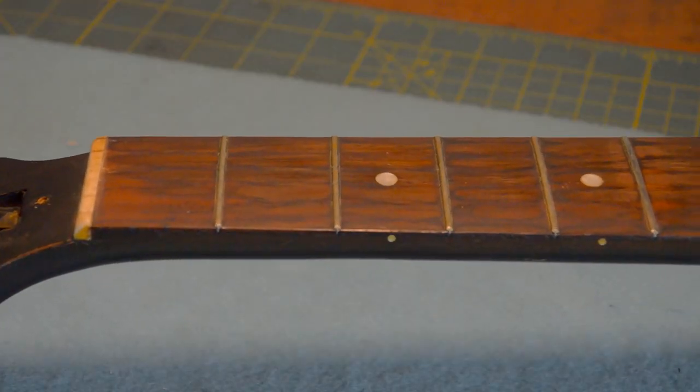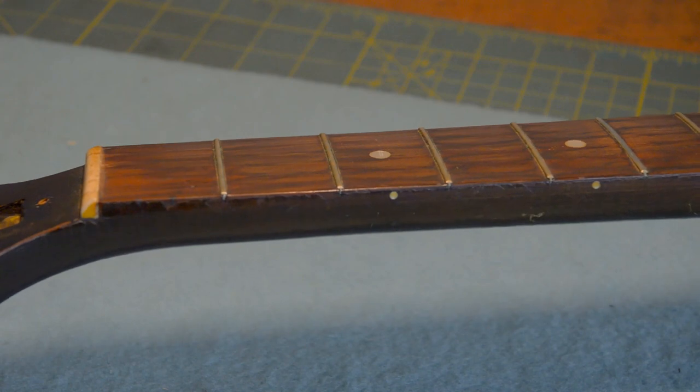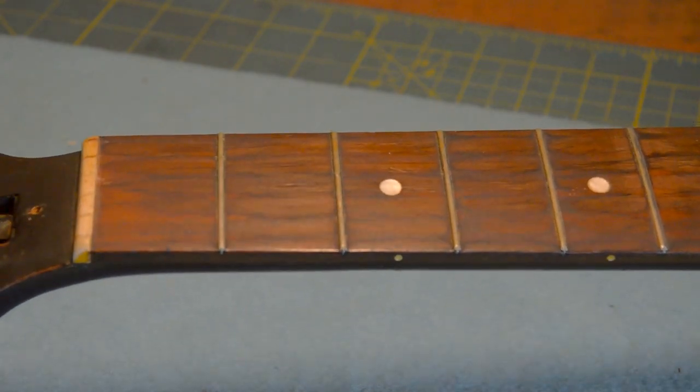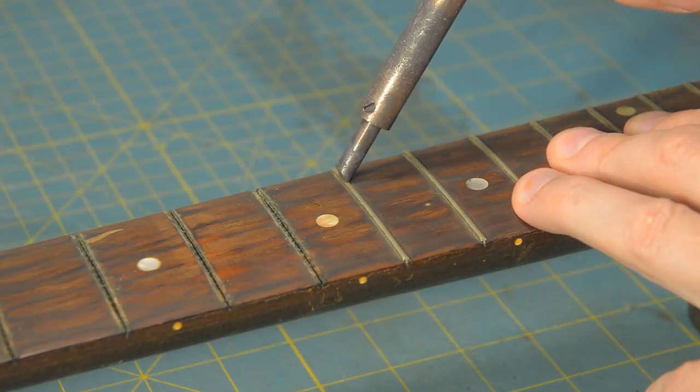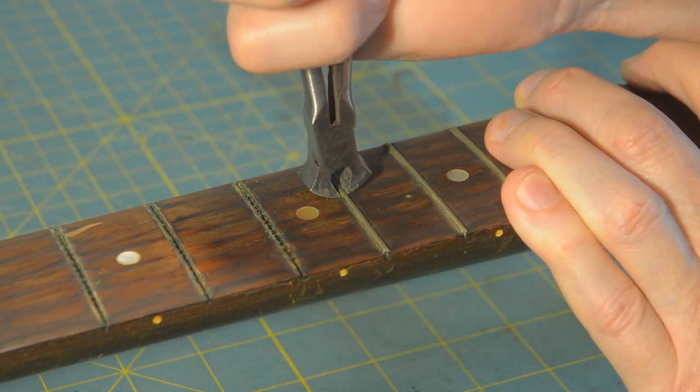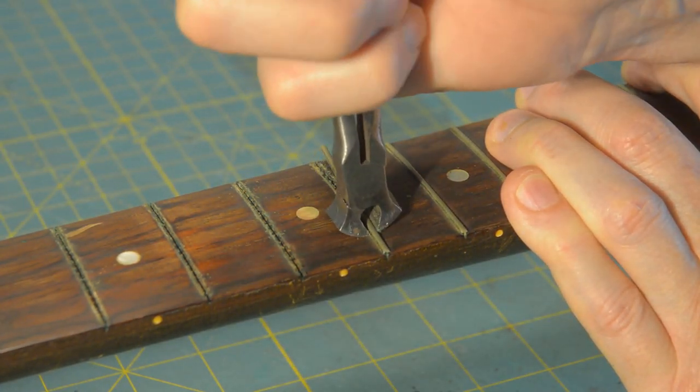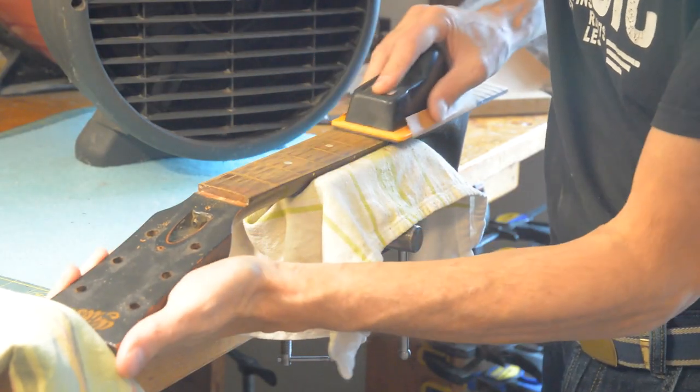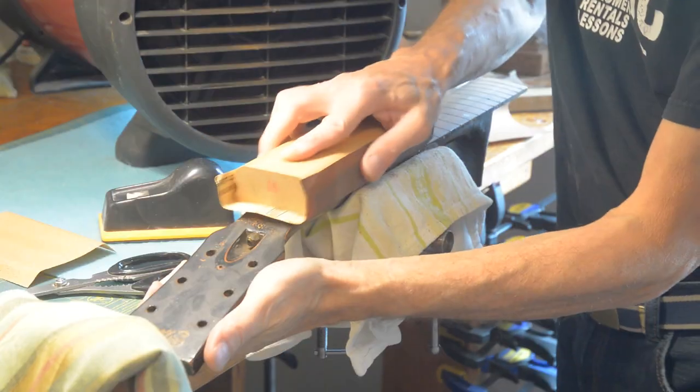I've seen worse frets, but I think I'll replace these 75 year old ones. I have to heat them with the soldering iron. And then with the side nippers, work them carefully out. Then I'm going to do a bit of sanding, but just a little bit, not too much.